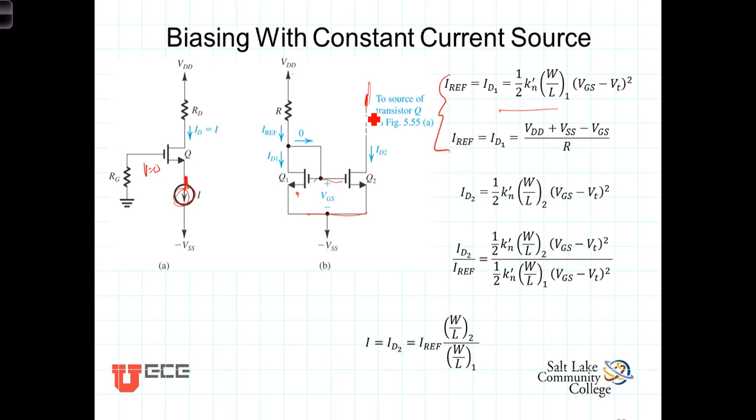So by making that ratio, because the gate-to-source voltages are the same, these cancel. The one-halfs, of course, cancel. The K sub N primes cancel. And we're left with I_D2 over I reference is equal to the ratio of the aspect ratios. Or the current in the source, then, is established as this reference current times the ratio of the aspect ratios.